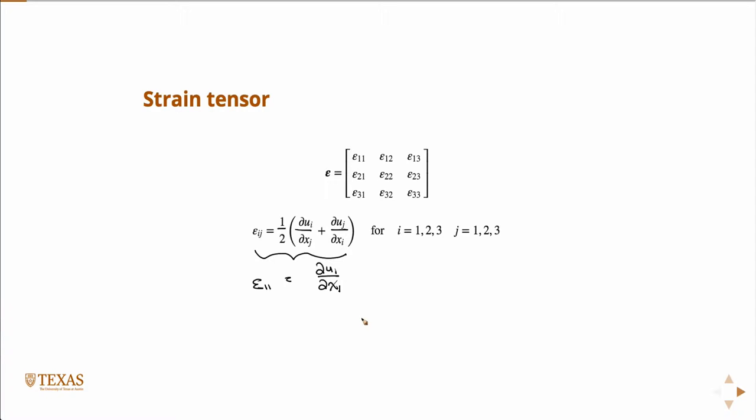So now we have strain, which is our relationship back to displacements. We have a relationship where we go from displacements to strain, and now we're going to go from strain to stress. Once we have that, we can plug it back into our conservation momentum equation and solve for the displacements. We have an equation that's completely in terms of unknown displacements, and we can solve for it.